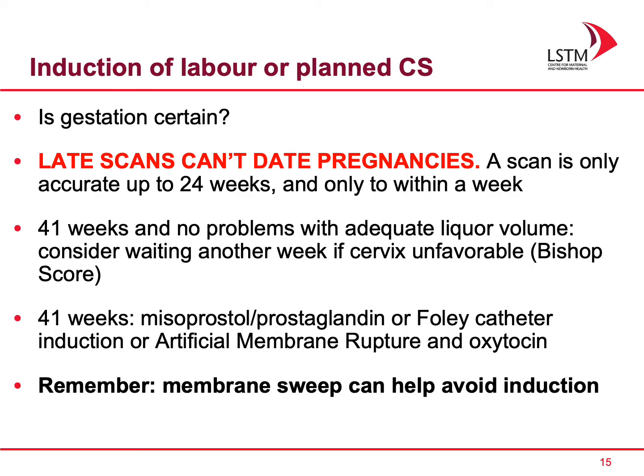If a woman is 41 weeks and there are no problems and adequate liquor volume, you can consider waiting another week if the cervix is unfavourable as judged by the Bishop score. Methods of induction at 41 weeks plus include misoprostol or prostaglandin, Foley catheter induction, or artificial membrane rupture with oxytocin. Also remember that a membrane sweep can sometimes help induction.